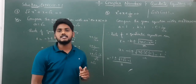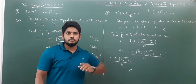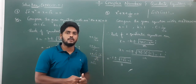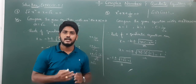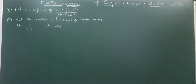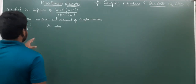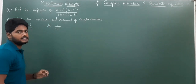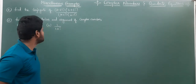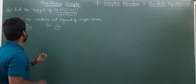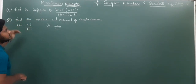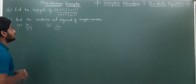Next, we will do miscellaneous examples from this chapter. By today's class and tomorrow's class, we will complete the chapter of complex numbers and quadratic equations. From the miscellaneous examples, we need to give importance to both examples and exercise problems. The examples start from question number 12, 13, 14, 15, and 16.